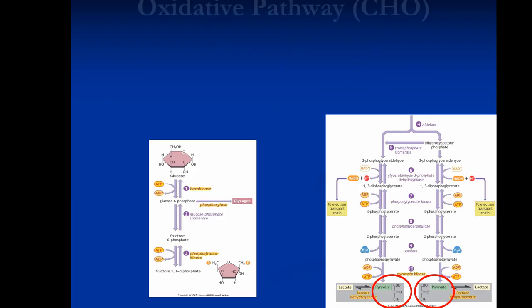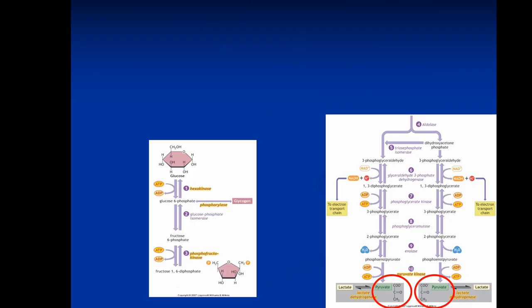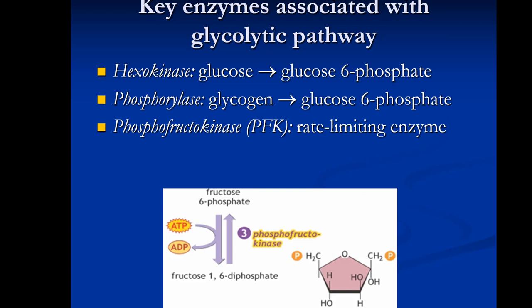Summary of the glycolytic pathway: it is anaerobic, occurs in the cytoplasm, starts with glucose or glycogen, and is a major pathway during high-intensity activity lasting approximately 20 to 90 seconds. Net result is 2 ATP from glucose or 3 ATP from glycogen, plus 2 pyruvate molecules converted to lactate. Key enzymes include hexokinase (phosphorylates glucose), phosphorylase (converts glycogen to glucose-6-phosphate), phosphofructokinase (rate-limiting enzyme), and lactate dehydrogenase (converts pyruvate to lactate).